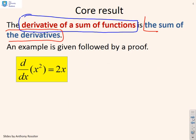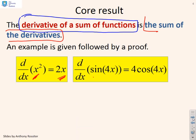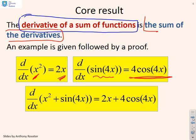So here's an example, and we'll do the proof in the following slides. Let's imagine you had x squared. The derivative of x squared is 2x. If you just had sin(4x), then the derivative is 4cos(4x). If you had a function x squared plus sin(4x)...